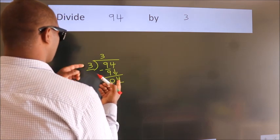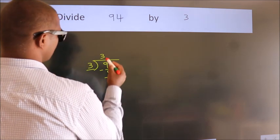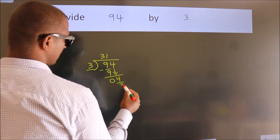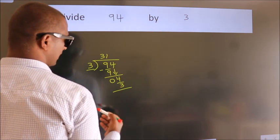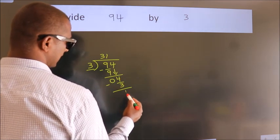A number close to 4 in 3 table is 3, 1 times 3 is 3. Now we subtract.